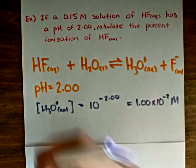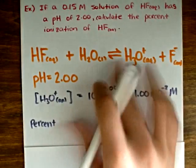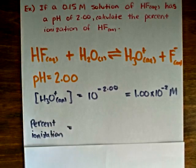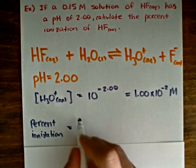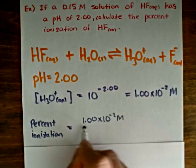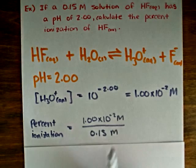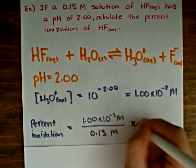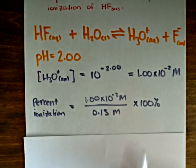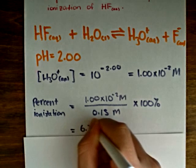And now, percent ionization will be equal to the concentration of the hydronium ion divided by the total concentration of 0.15 moles per liter, times 100%, which gives us a percent ionization of 6.7%.